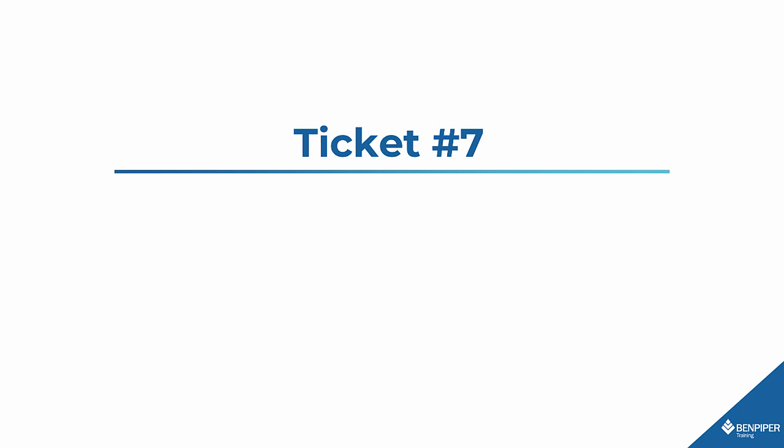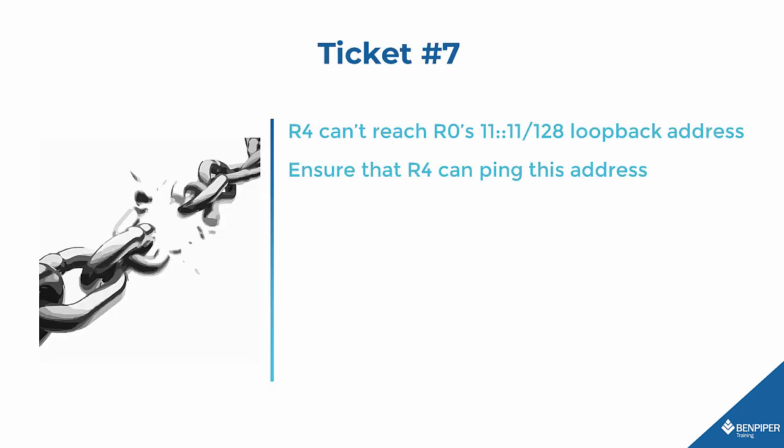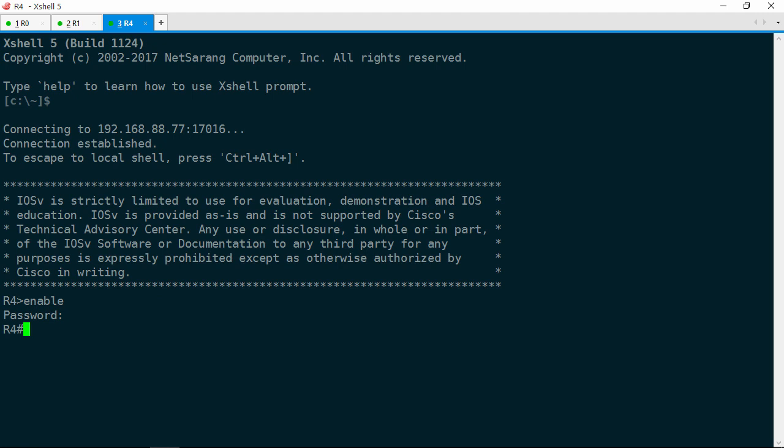Next up is ticket number 7. R4 can't reach R0's 11::11/128 loopback address. Ensure that R4 can ping this address. Sounds like a pretty simple, straightforward ticket. Let's go onto R4 and see if we cannot ping that address. Before we try to ping it, let's check the IPv6 routing table. Show IPv6 route 11::11, and the route is not found. Obviously we're not going to be able to ping it if we don't have a route to it.